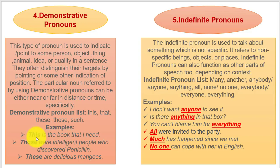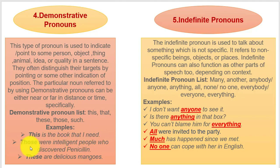'This' is used when the thing is singular and close to you: 'This is the book.' If the book were far away from you, you would say: 'That is the book that I needed.' When the thing is far away in time or distance, you use 'those': 'Those were intelligent people who discovered penicillin.'